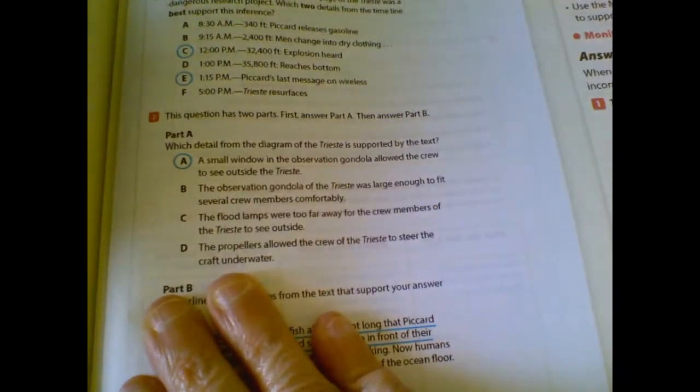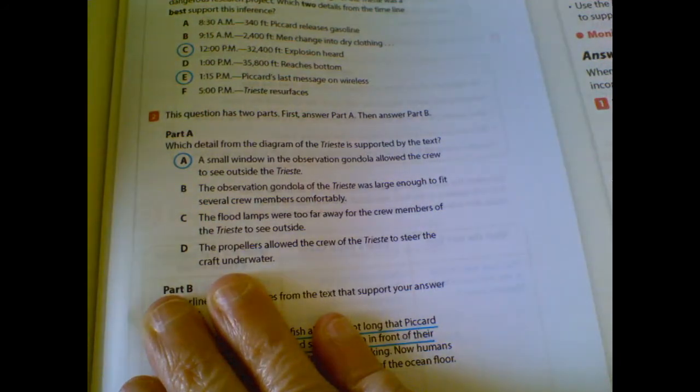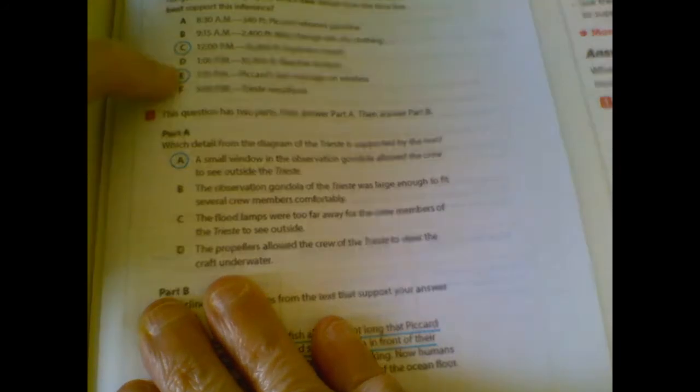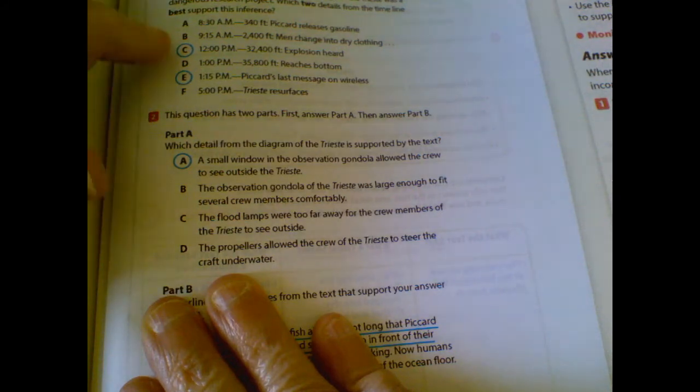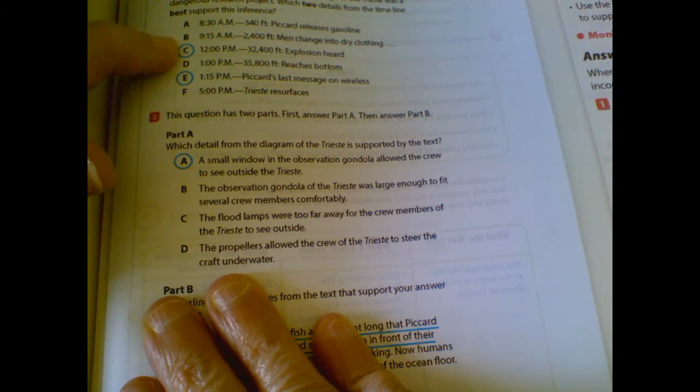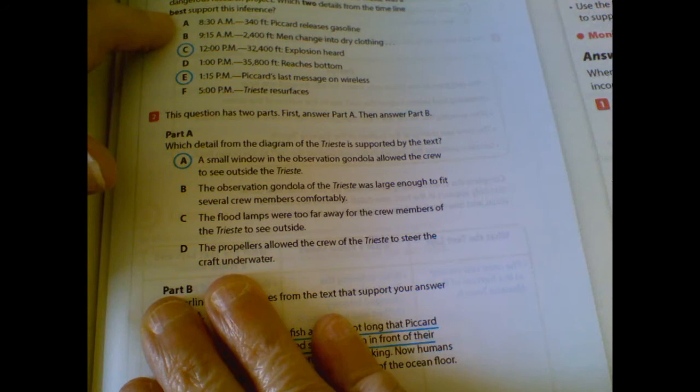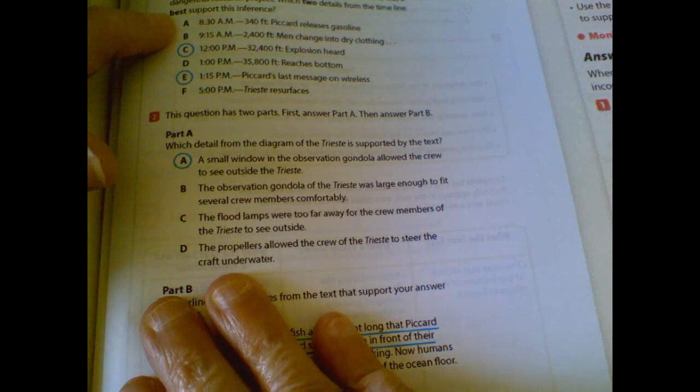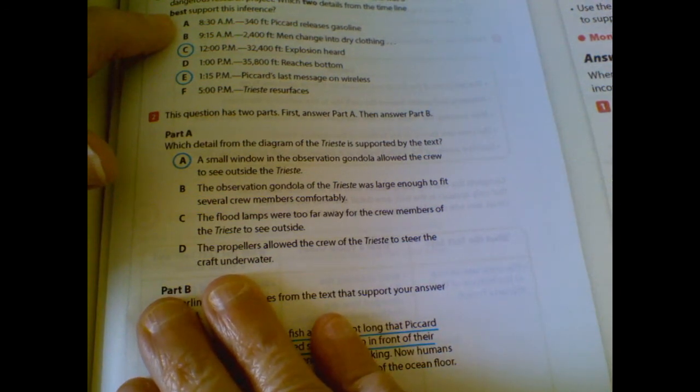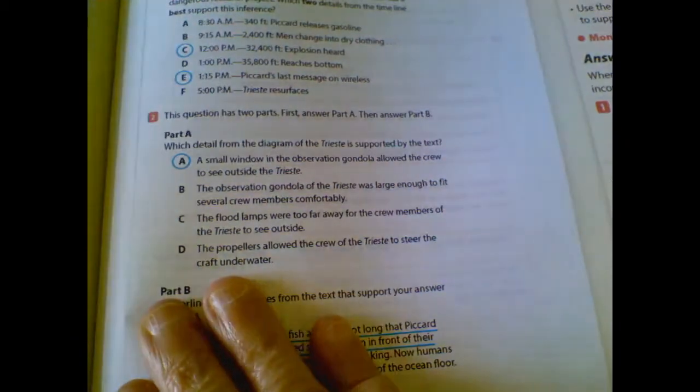So if I look at that, I noticed they have chosen choice C and choice E. So let's go back and let's look at those choices that we did not circle, or let's look at the ones we did first and why those are right. The inference that the voyage was dangerous is supported by the details about the explosion being heard, which is in choice C, and communication ending. Let's look at A. A is incorrect because Picard meant to release gasoline so the craft could sink. B, D, and F are milestones reached by the craft, but they do not show that the crew was in danger. So your best choices are C and E.